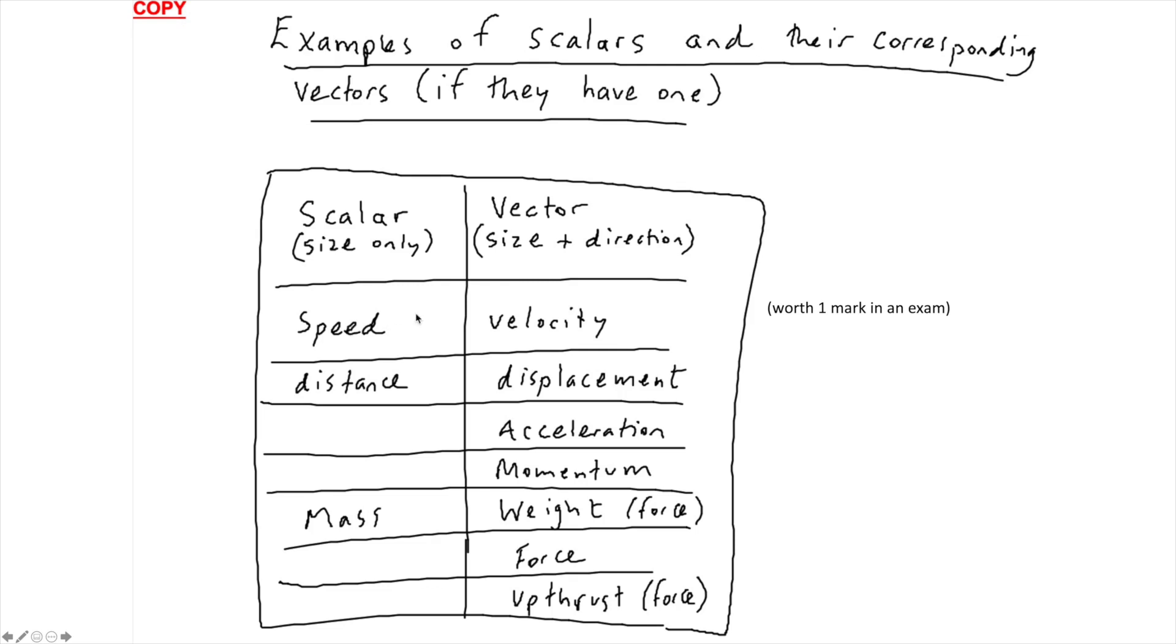So speed does have a corresponding vector, which is velocity. Distance as a scalar has a corresponding vector, which is displacement. So whereas distance is only size, displacement has size and direction. And you can also see mass is a scalar, and its corresponding vector is weight, which of course has a direction, which is always downwards. And there's a few more examples in the table there.